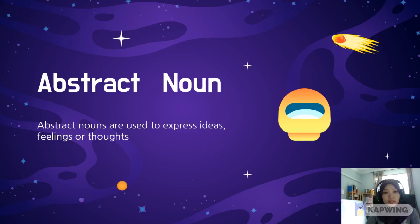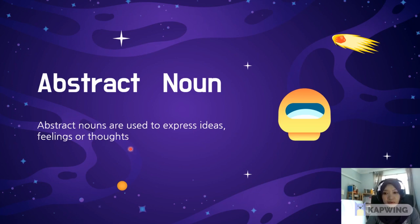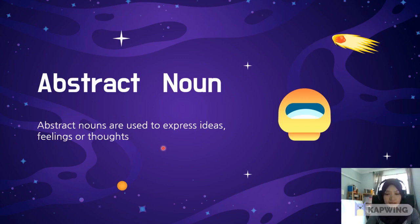Look here. Abstract nouns are used to express ideas, feelings, or thoughts. Of course, you can't measure feelings or thoughts — it's something immeasurable. You cannot touch it, you can't feel it. You can't really interact with it through your senses. You can't smell it.